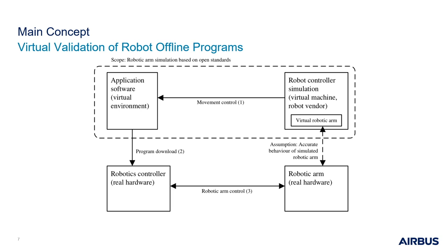At this stage, the robot path should be different from the ideal trajectory as the path planning is done by the virtual robot controller. If any issues or collisions are detected in the validation process, the program is modified and tested again. A final version of the offline program is generated at the end of these iterations. This final robot program is then executed in the real robot controller on the shop floor, which results in similar behavior of the real robot as in the simulation.